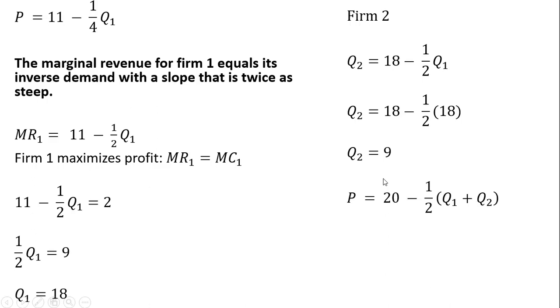To get the price in this market, take our original inverse market demand and substitute in 18 and 9 for Firm 1 and Firm 2's output. The market price will be $6.50 per unit.